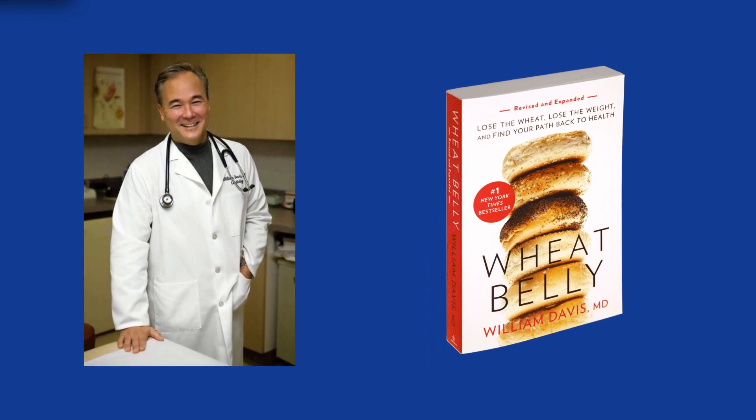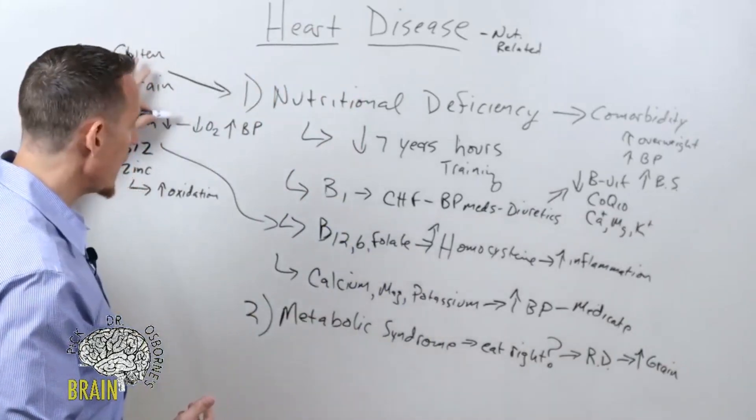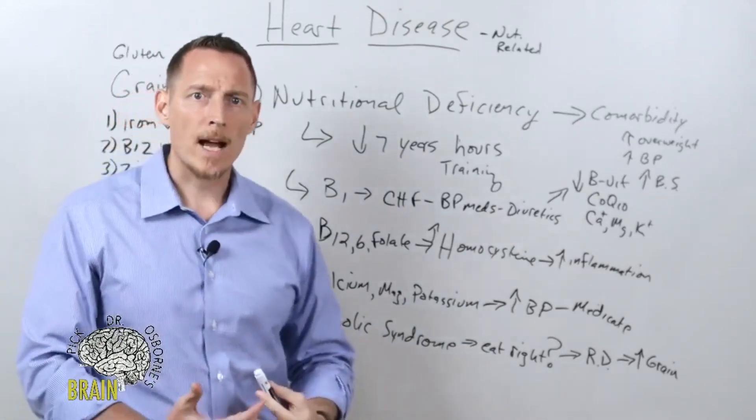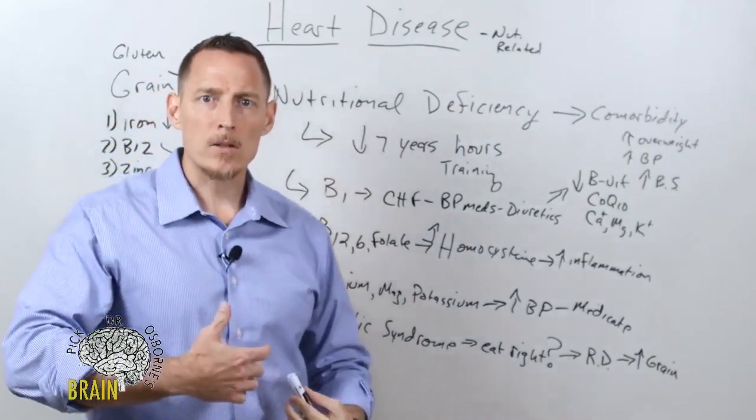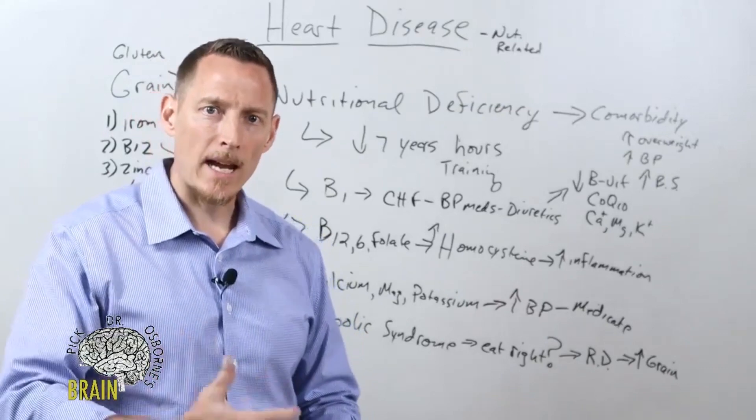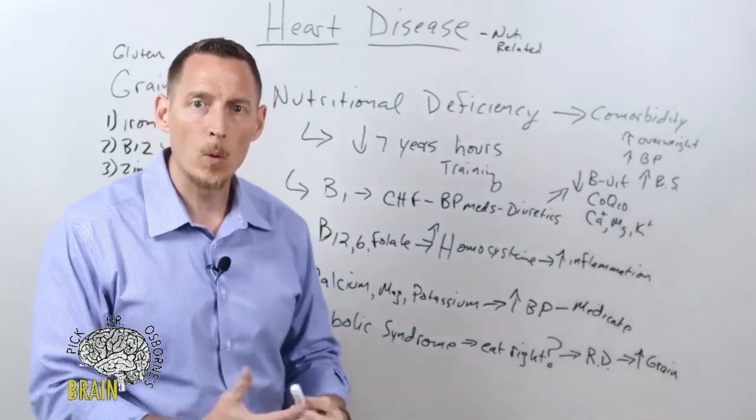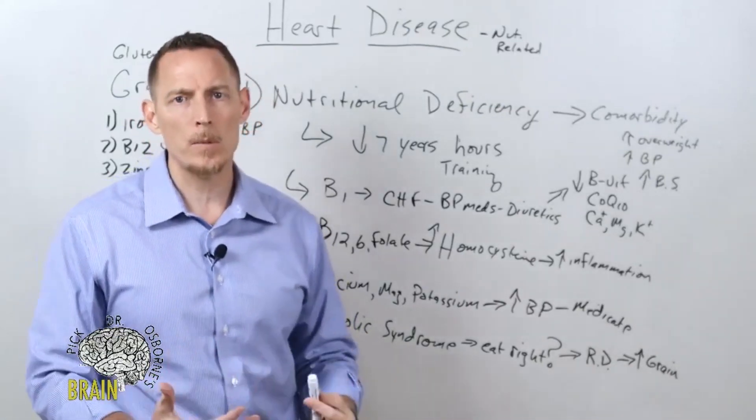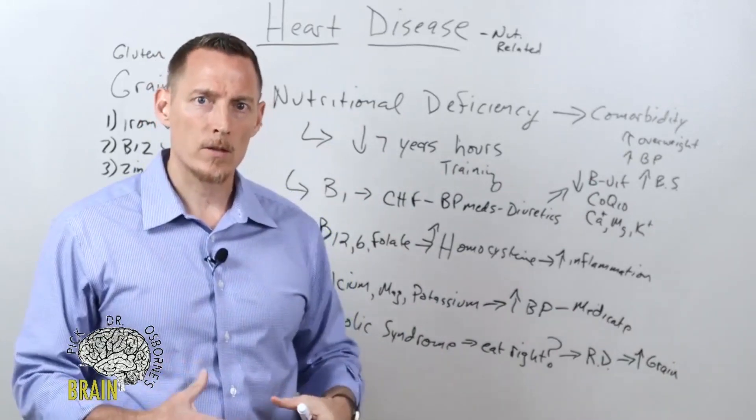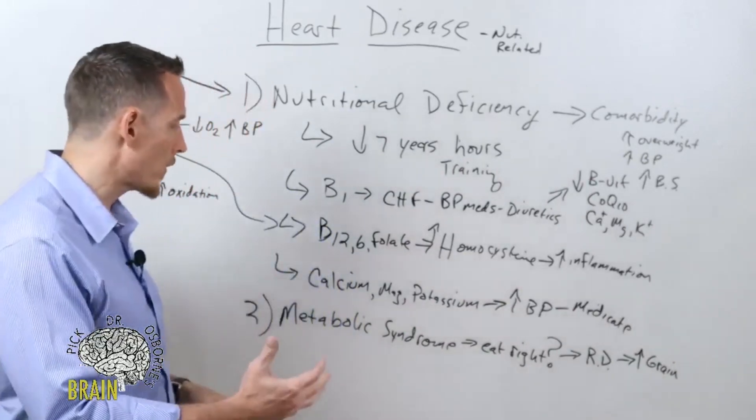He talks about how one of the components of grain, aside from gluten, is a sugar called amylopectin that actually spikes sugar and spikes insulin more than pure cane sugar does. It's actually more detrimental, and so many people eating so much wheat today are causing that central adiposity, that central fat storage, and that insulin resistance. Another one of our board of advisors, Dr. Jack Wolfson, also referred to as the Paleo Cardiologist, has a book by the same name.